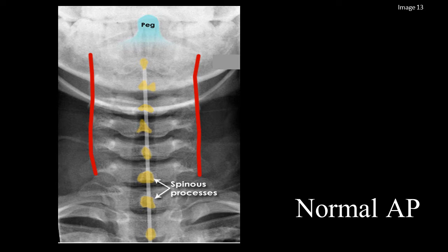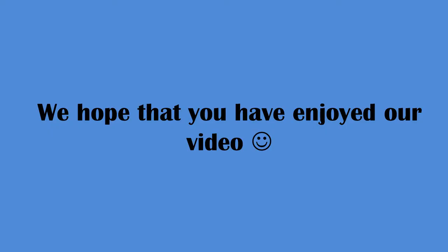A similar approach to the lateral view is followed for the AP view. The AP view should cover the whole C-spine and the upper thoracic spine. The lateral edges of the C-spine should be aligned, as shown by the red lines. Look at the individual bones — fractures are often less clearly visible on this view than on the lateral. The spinous processes, shown in yellow, should be in a straight line and spaced evenly. Check soft tissues for swelling and surgical emphysema. We have now come to the end of our video. Thank you for watching.